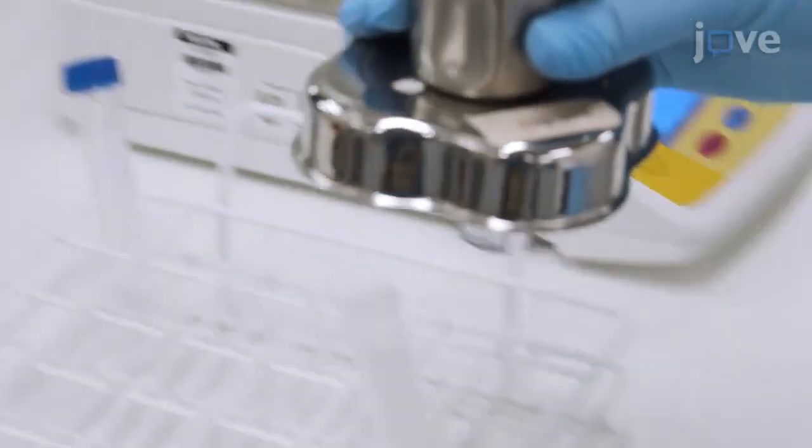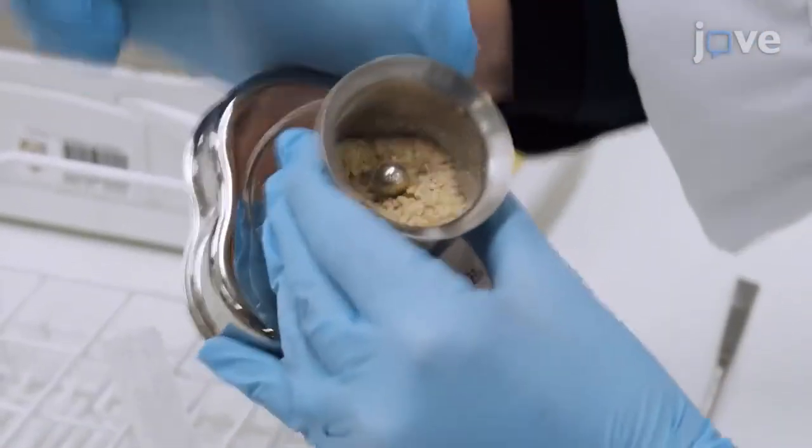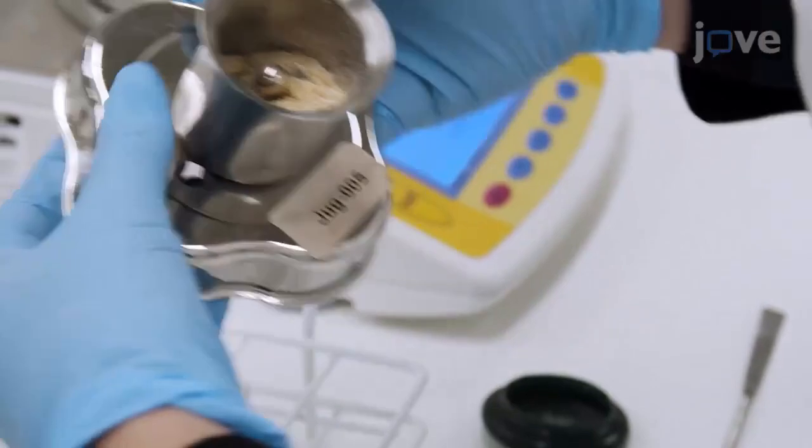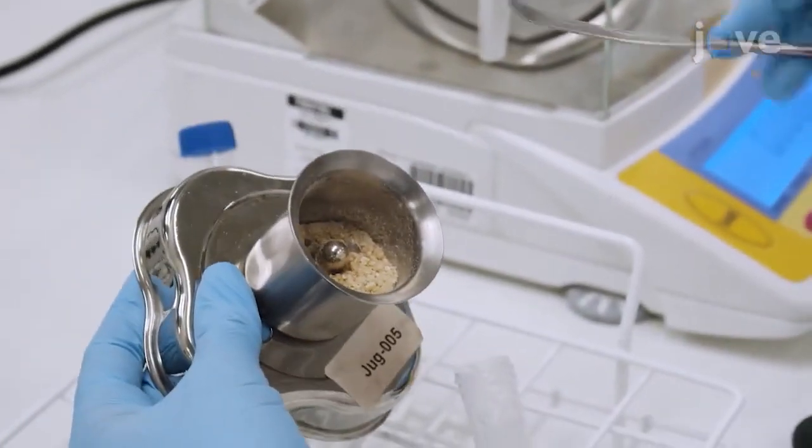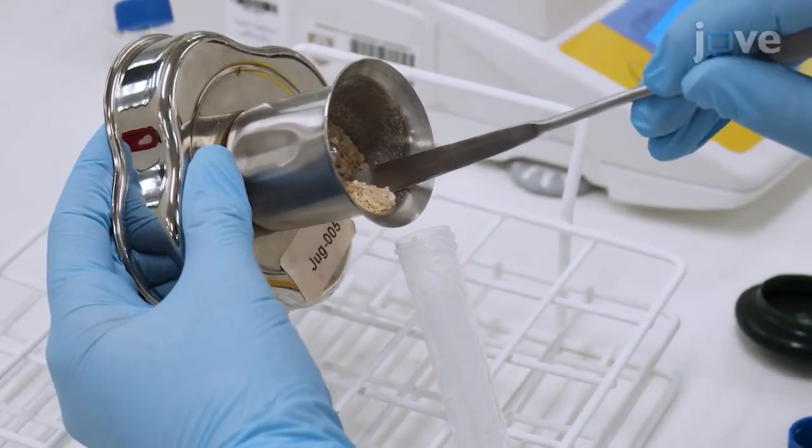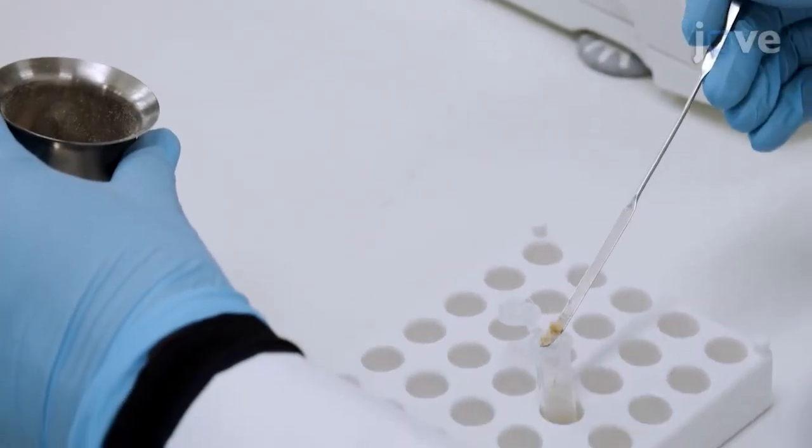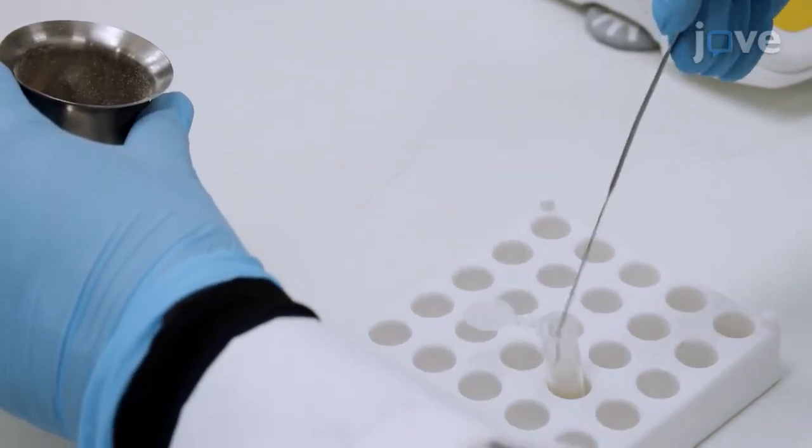Remove the blender jar from the base. Tap the side of the blender jar to bring any coarsely ground grain to the surface of the sample. The coarsely ground grain can be discarded or stored. Transfer the finely ground grain from the blender to a 2ml plastic microcentrifuge tube.